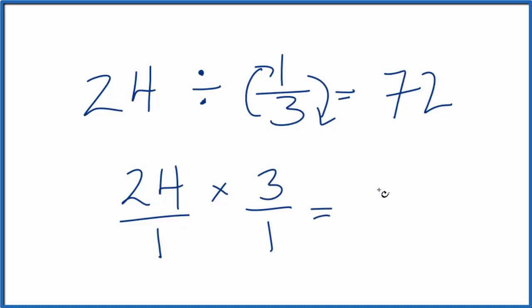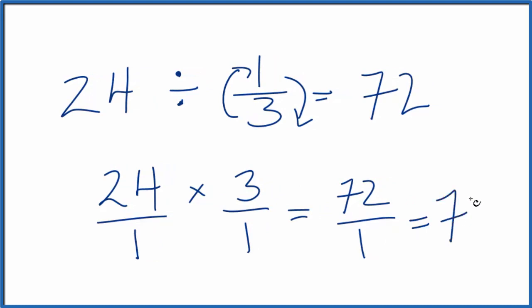Now, 24 times 3, that's 72. 1 times 1 is 1. So we get 72 again.